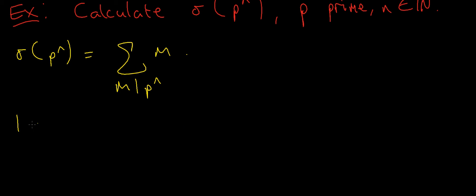1 divides p to the n, p divides p to the n, p squared divides p to the n, p cubed divides p to the n, and so on, until p to the n. These are all divisors of p to the n.